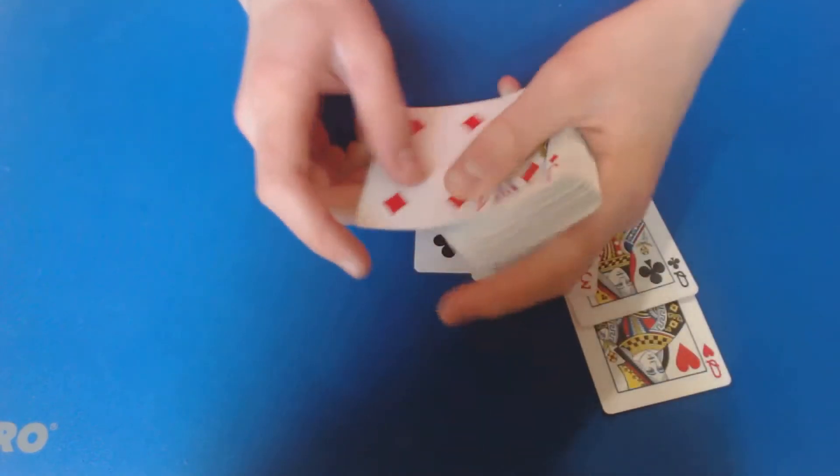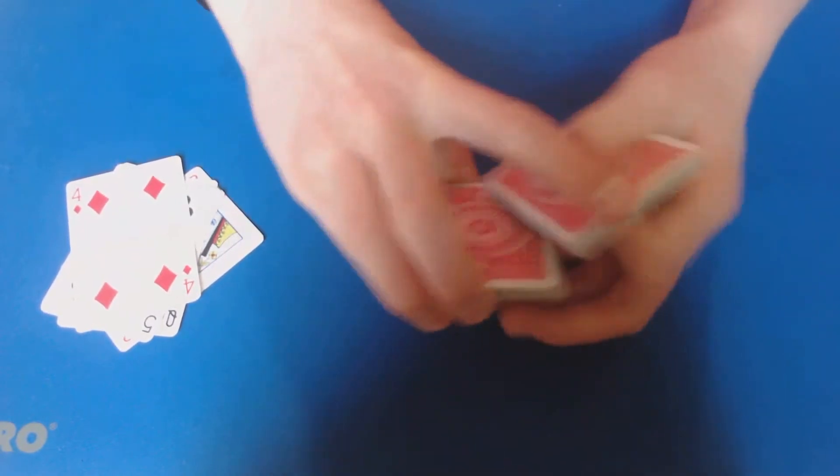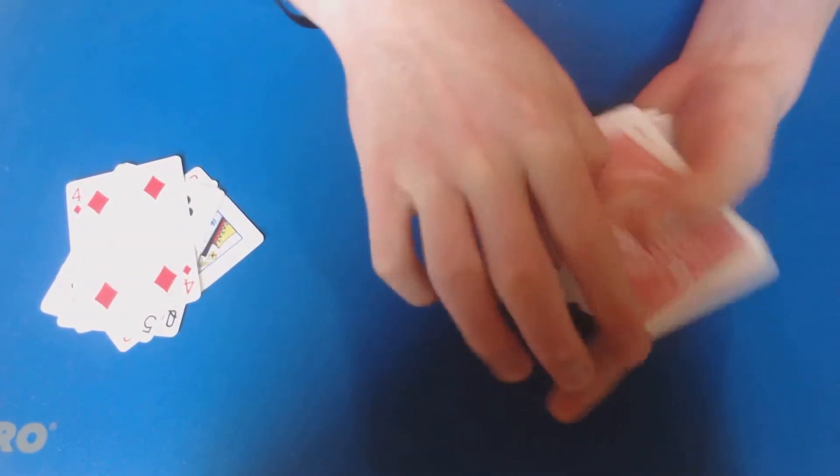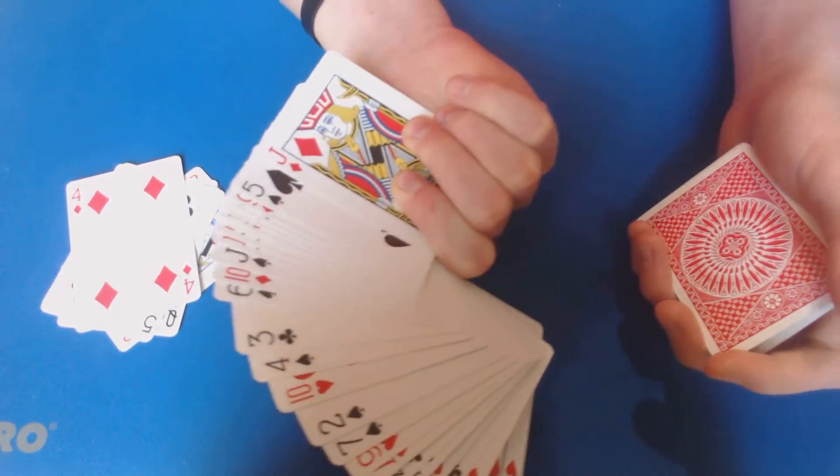All right, so then go ahead and ask them, are any of these bottom five cards yours? They're going to say no, obviously, because it's not there. Then go ahead and fan the bottom half, not the top half.